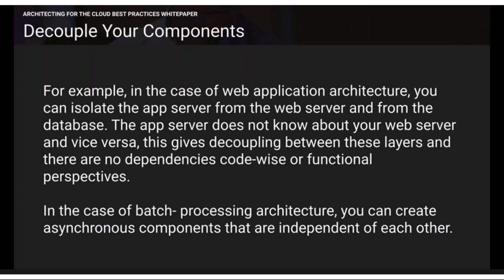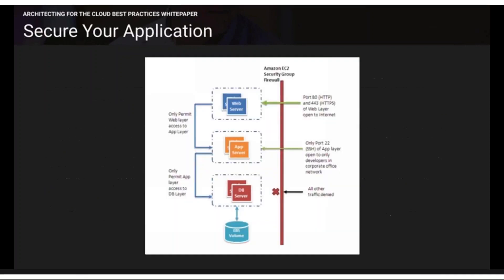In a web application architecture you can isolate the application server from the web server and from the database. In real time, there are two types of architecture: two-tier and three-tier. The three-tier architecture shown here has a web server, an application server, and a database server. In two-tier, either the web layer or the application layer is removed, keeping only the database and one other layer.